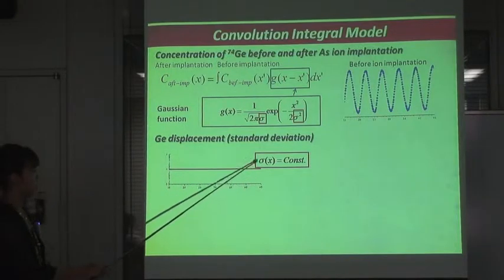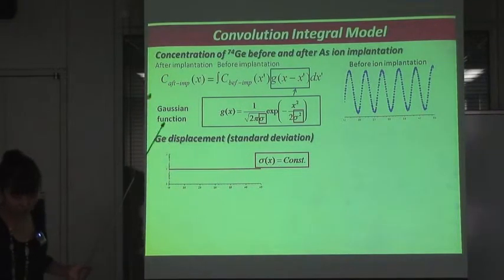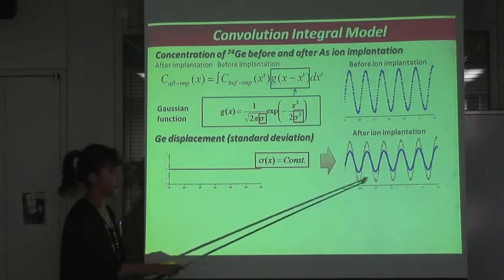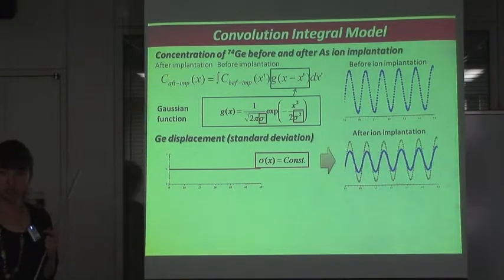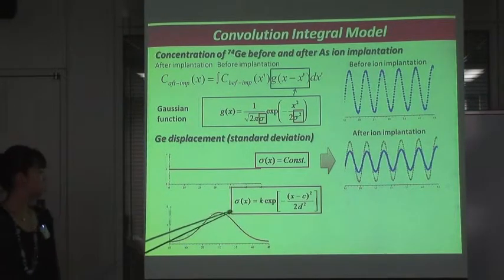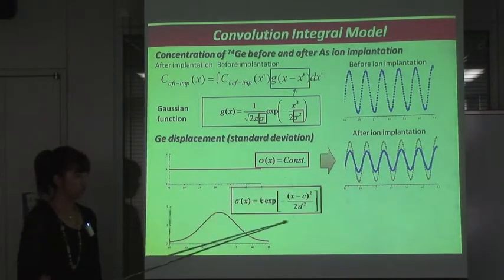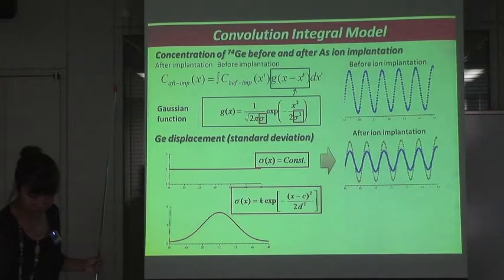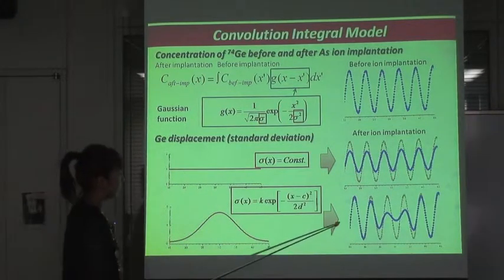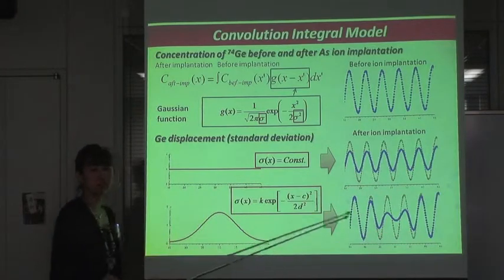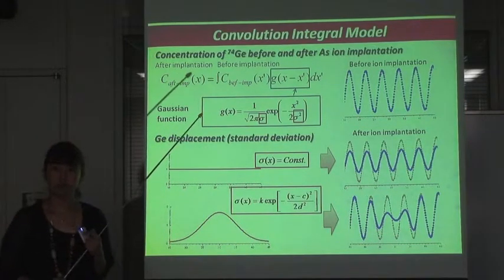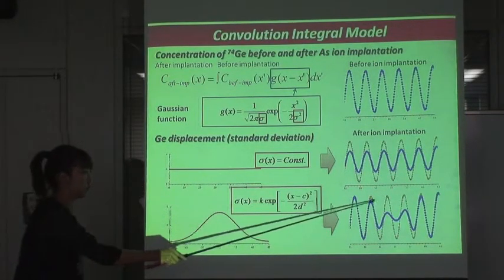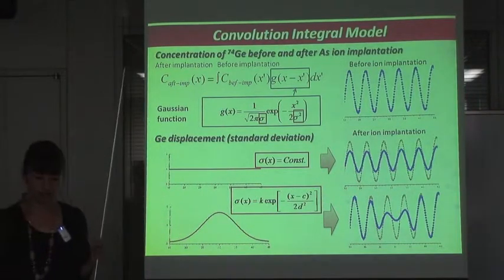If sigma is constant, then the concentration after implantation is as shown in this figure. However, in the case of ion implantation, sigma is described by a function that has a distribution over depth. As a result, the concentration after implantation changes accordingly. We obtained Germanium atomic displacement by fitting this simulation result to the sigma depth profiles.